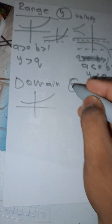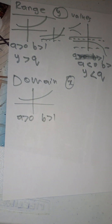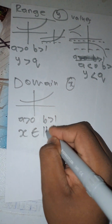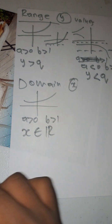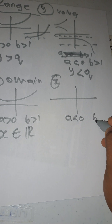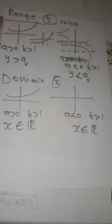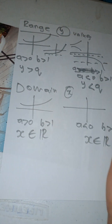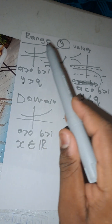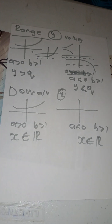Now for the domain — the set of x-values. For both an increasing function (a > 0, b > 1) and a decreasing one (a < 0, b > 1), the domain is simply x is an element of real numbers. So: if your graph is positive, the range is y greater than q; if negative, y less than q. Domain is always all real numbers.